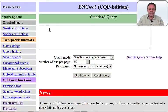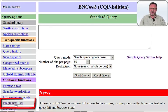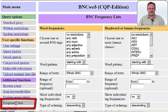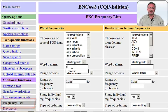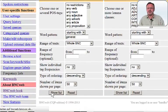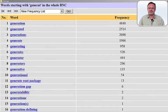So, let's use the frequency list option. Here the word pattern input box allows us to select the initial letters of our target item and shows the results in descending order.